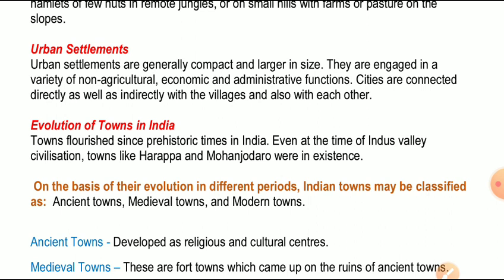Now the next topic is evolution of towns in India. Towns flourished since prehistoric time in India. Even at the time of Indus Valley Civilization, towns like Harappa and Mohenjodaro were in existence. हमारा जो शहरी कल्चर है, यह प्रागैतिहासिक काल से पाया जाता है। सिंधु घाटी सभ्यता - जो विश्व की सबसे पहली सभ्यताओं में गिनी जाती है - उस सभ्यता में भी Harappa और Mohenjodaro जैसे बड़े शहर मौजूद थे। On the basis of their evolution in different periods, Indian towns may be classified as ancient, medieval, and modern towns।